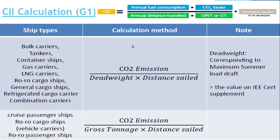If we take a closer look, the CO2 emission is basically the annual fuel consumption obtained from the IMO DCS multiplied by the conversion factor. The formula is: CO2 conversion factor multiplied by annual distance travelled, divided by dead weight or GT, then multiplied by a correction factor. This correction factor is given by IMO based on whether your ship is sailing in rough weather or has been anchored for some period, in order to rectify those deviations.